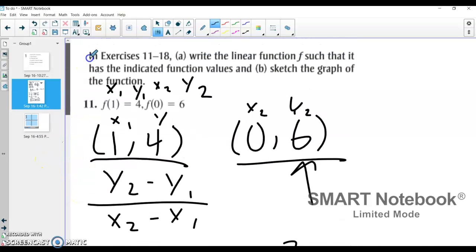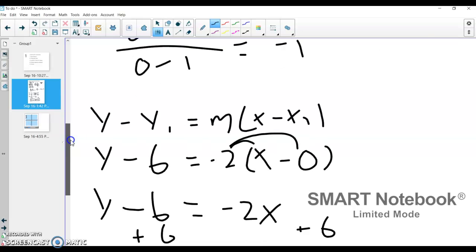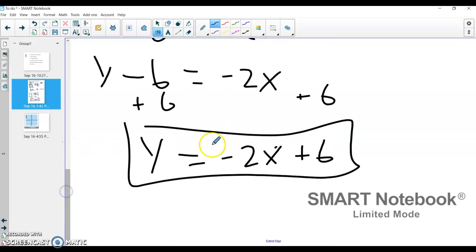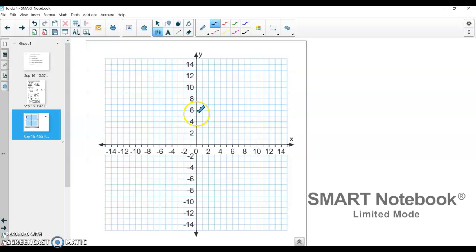Now, part b, where you have to graph it, or at least sketch the graph, I'm just going to sketch the graph of this linear function. So y-intercept is up at 6, and we have a slope of negative 2. So I go to my graph. My y-intercept, I said, was up at 6 and has a slope of negative 2. So I go down 2, over 1, down 2, over 1, down 2, over 1. And I create my line.